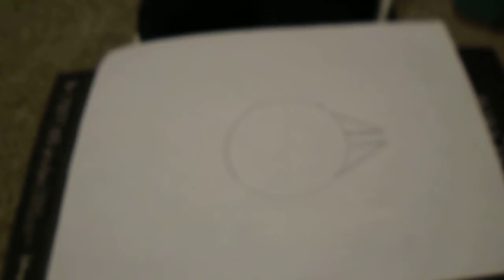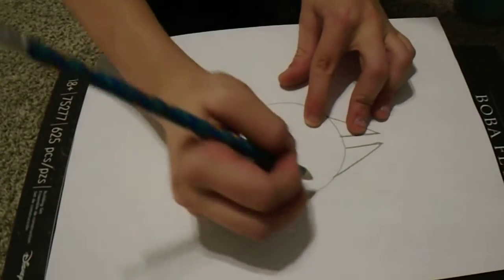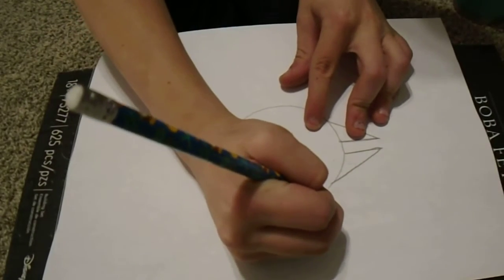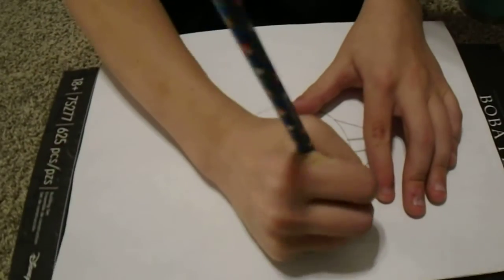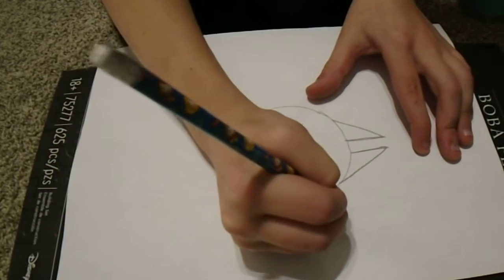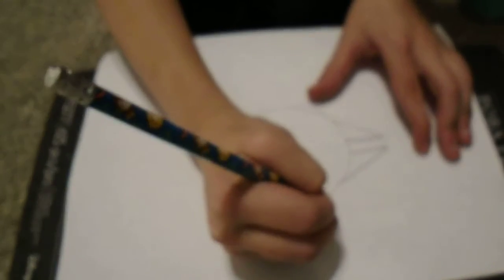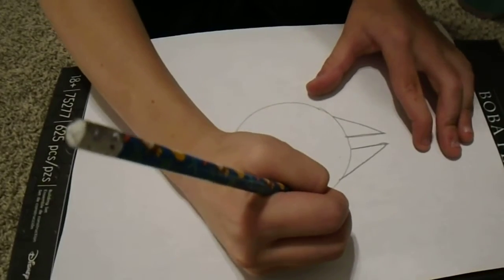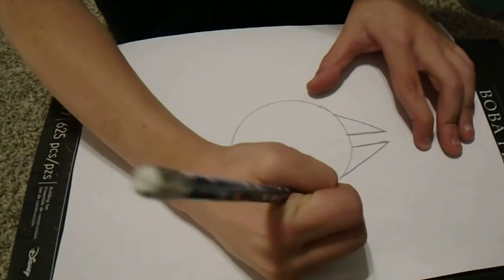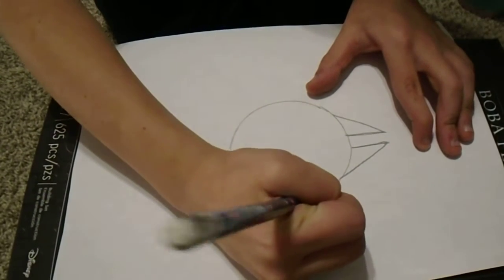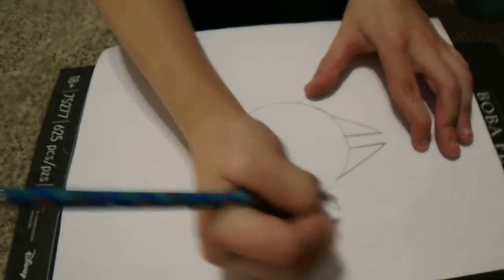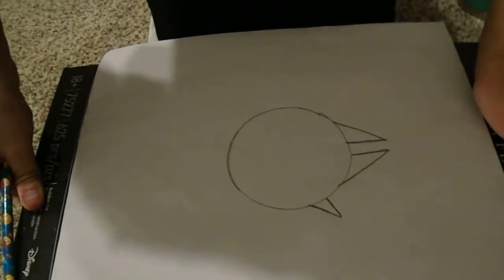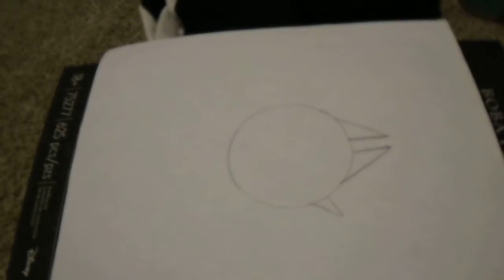You can kind of see where this is getting off to. Next, we're going to draw the cockpit area. We're going to start off with a line a little shorter than this, probably about right here on the ship.